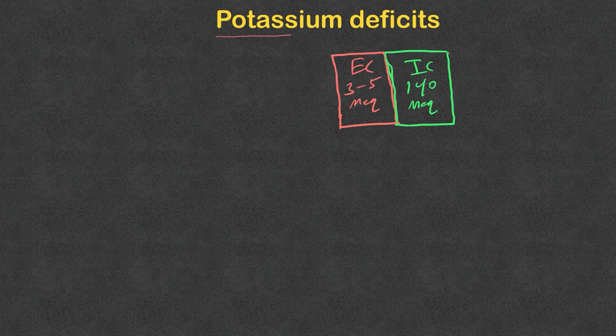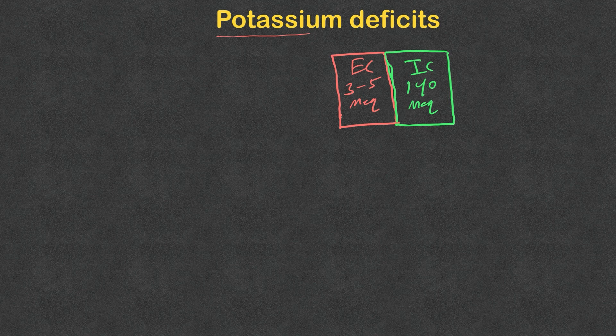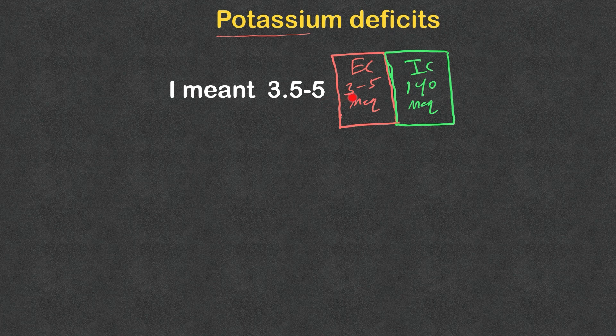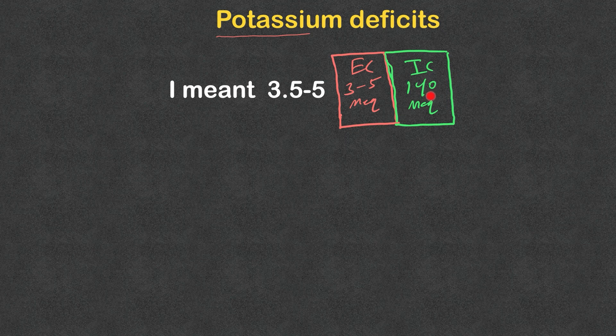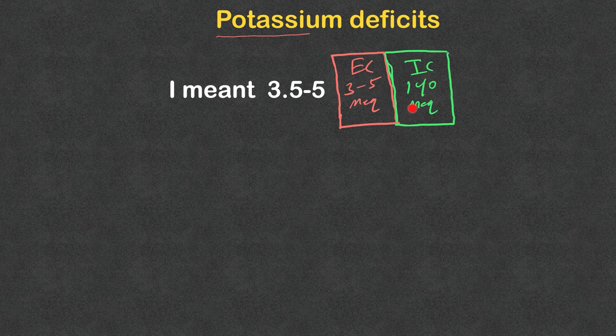There are a few things very important to understand before we go into the potassium deficits. This is the intracellular space and this is the extracellular one. The concentration of potassium in the extracellular fluids is 3 to 5 milliequivalents, and this is what we see in the blood work. While the concentration in the intracellular fluid is 140 milliequivalents, that tells you that the vast majority of body potassium lives in the intracellular space.